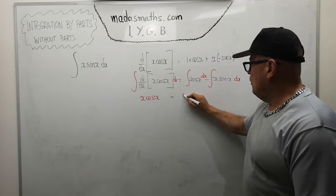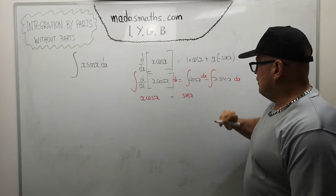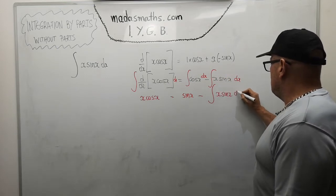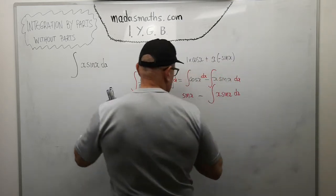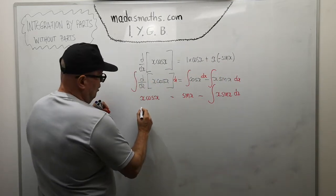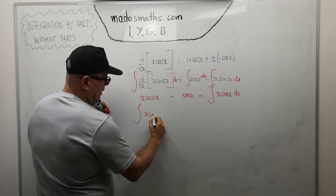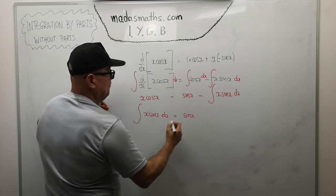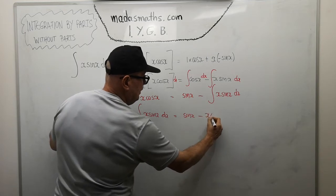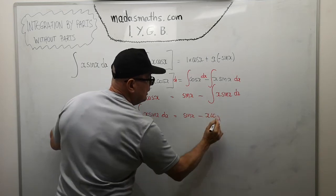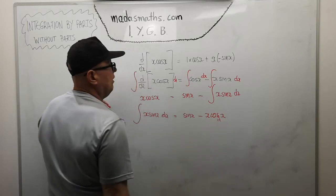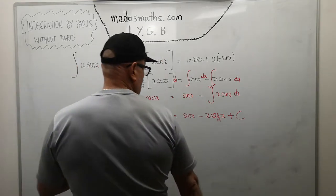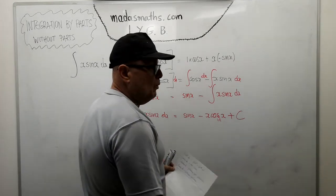So x·cos(x) equals sin(x) minus ∫x·sin(x)dx. Moving ∫x·sin(x)dx to the left-hand side makes it positive, so ∫x·sin(x)dx equals sin(x) minus x·cos(x) plus C.